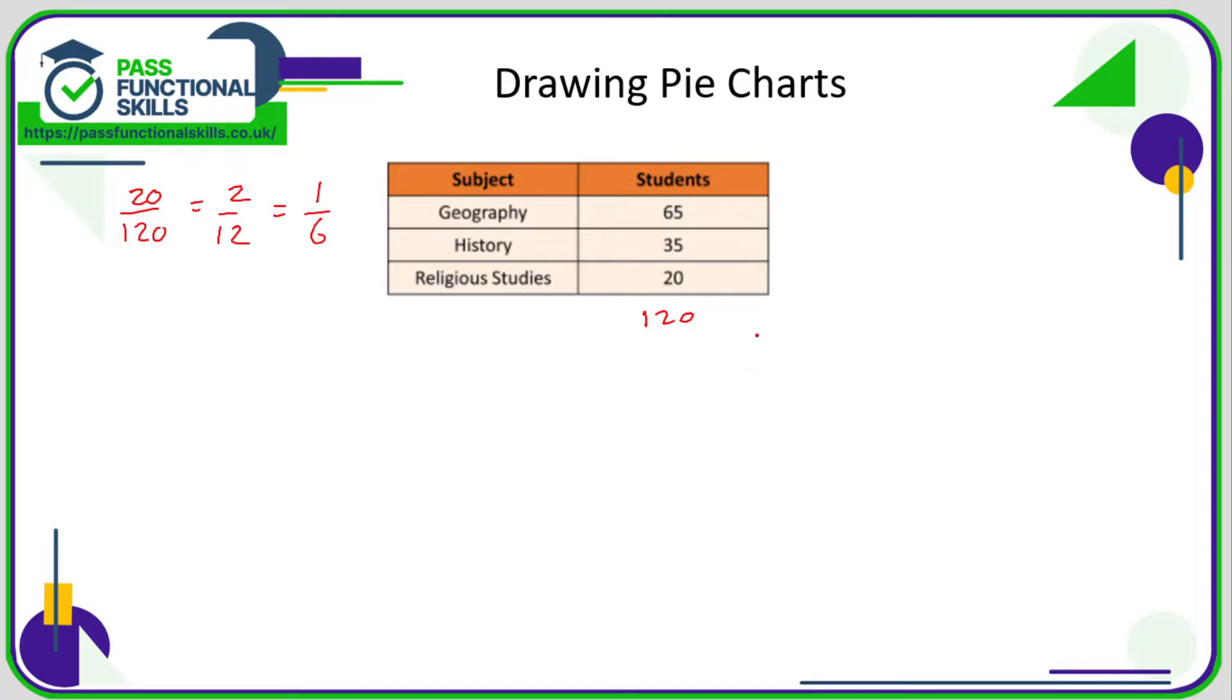Now the full pie has got to be 360 degrees. So 360 degrees represents the full 120 students. So if one-sixth of them said RE was their favorite, then what is one-sixth of 360? That corresponds to 360 divided by 6, which is a 60-degree slice.